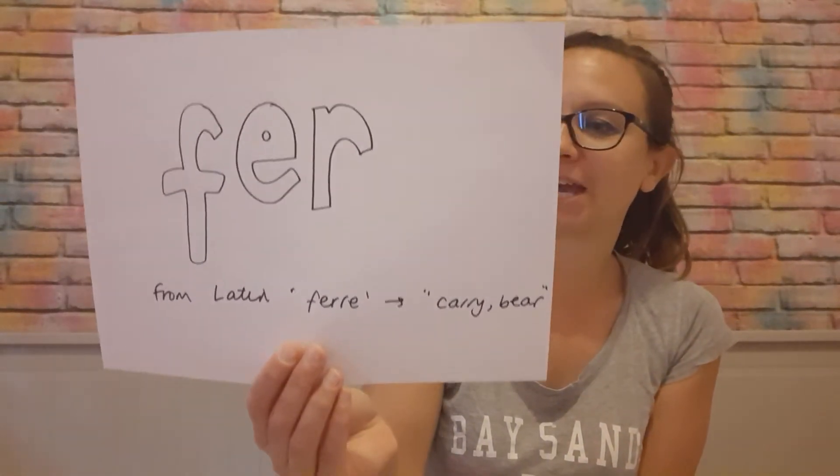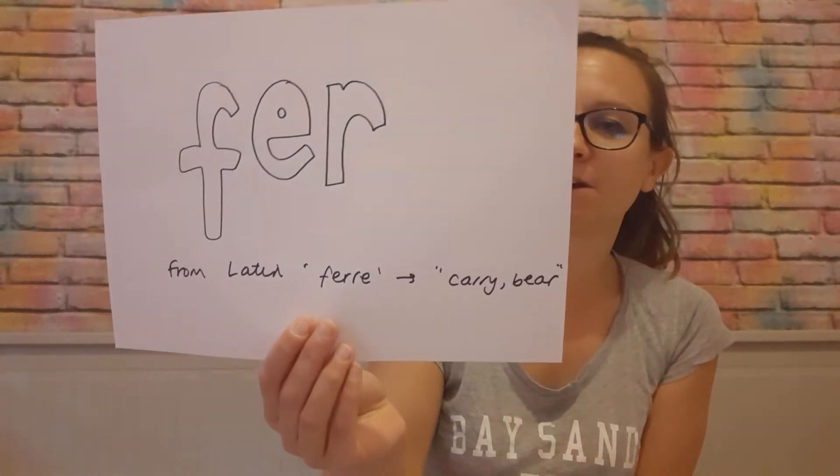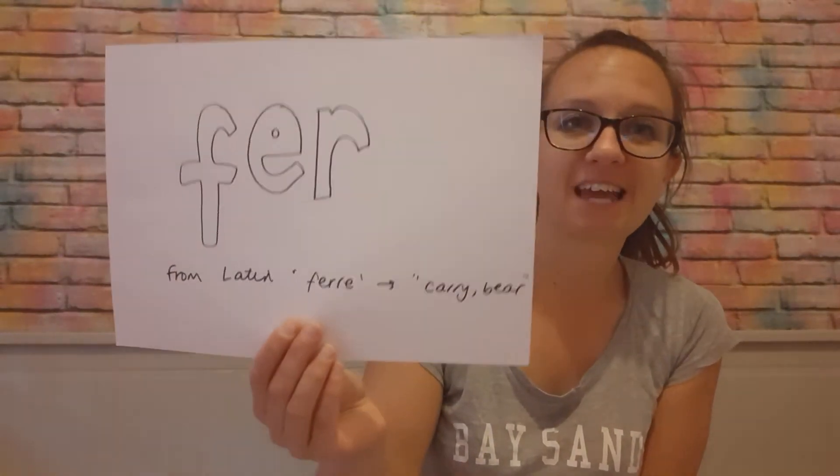Hello and welcome back to Mrs Hewitt's spelling at home. Today our root morpheme is a very common one — there are lots and lots of words we're going to do today. It is 'fer', from the Latin 'ferre', which means to carry or to bear — bear as in bear weight. So it's really that carrying sense, the sense of carrying something.